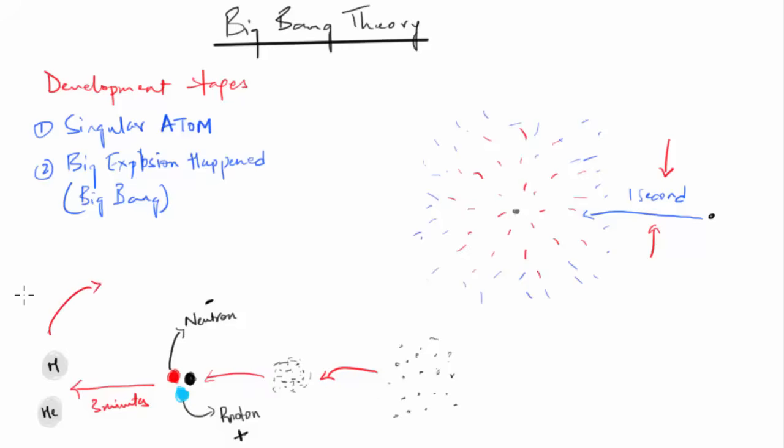After 300,000 years, the universe had cooled to about 4,000 degrees. Atomic nuclei could finally capture electrons to form fully-fledged atoms. Then the universe became transparent and got filled with clouds of hydrogen and helium gas.